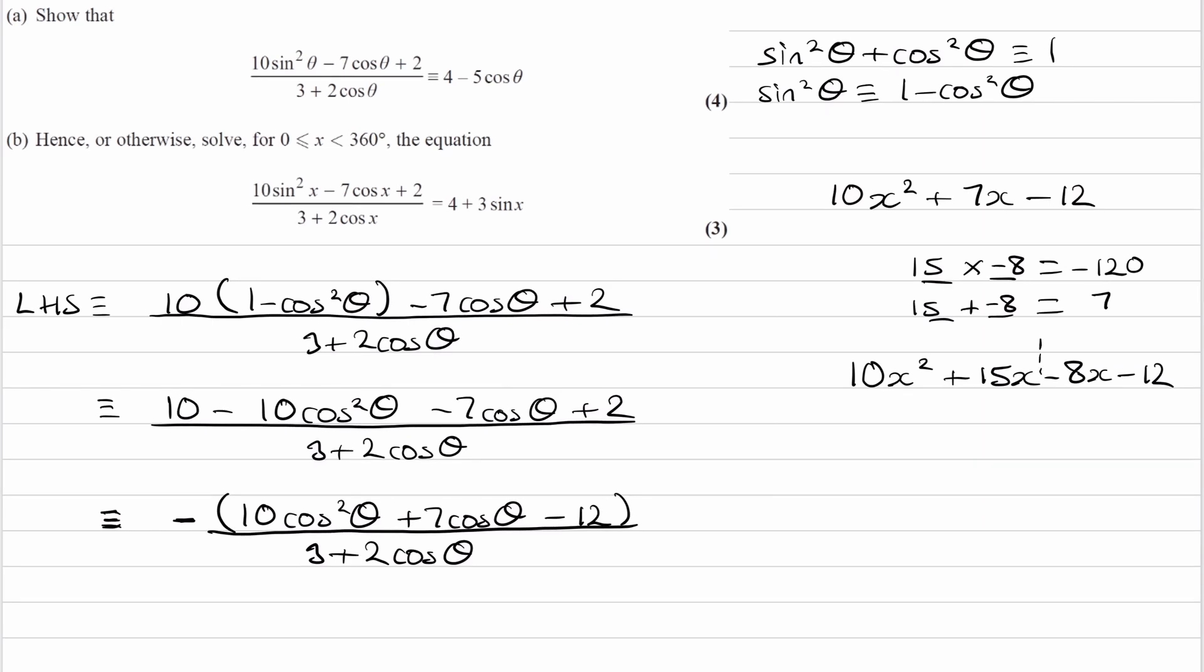Then we factorize each half. So the left-hand side, we can take out a factor of 5x, and we're left with 2x plus 3. The right-hand side, we can take out minus 4, and again we're left with 2x plus 3. So these two brackets are the same, so that is what we want. And then we take out a common factor of 2x plus 3 from both halves, and then we're left with 5x minus 4.